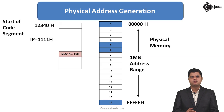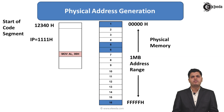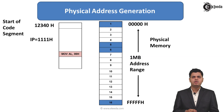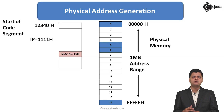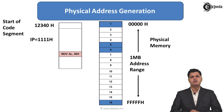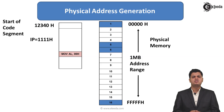Now let us look at an example. We have 1 megabyte of memory with segments 1, 5, 6, and 16 defined. One segment selected is starting from address 12340H — that is the starting address of the code segment. The instruction pointer is 1111H. The instruction at that location is MOV AL, 00H. We are going to find the physical address of this instruction.